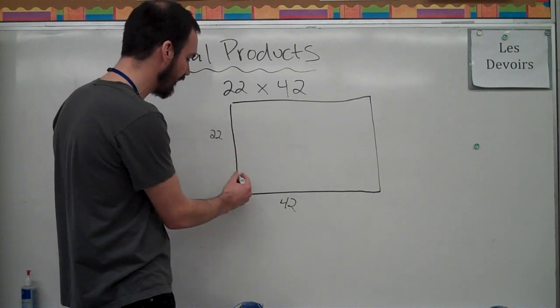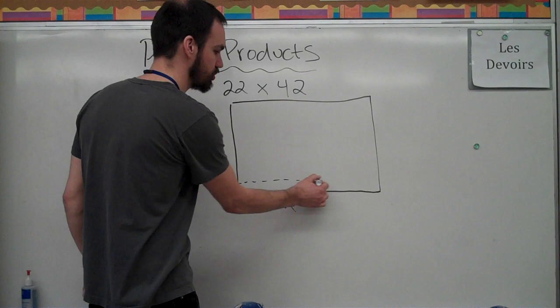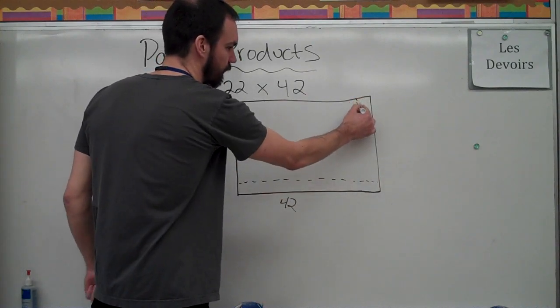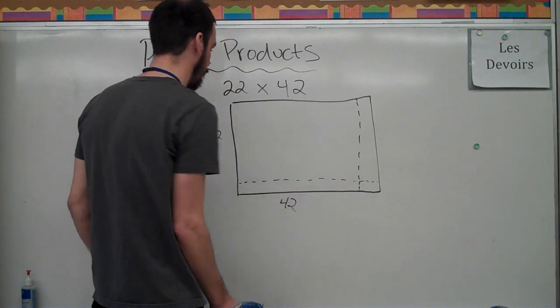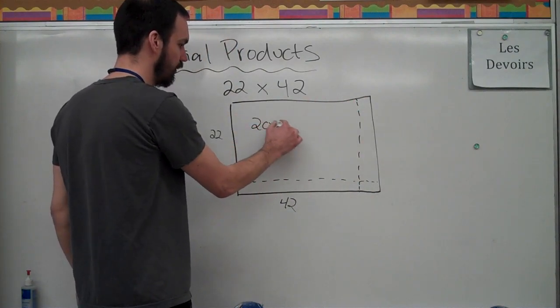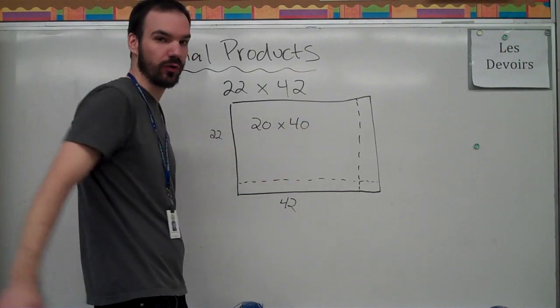So, I'm going to go, well, I like 20, I don't like 22. So I'm going to chop off two there, and I like 40, I don't like 42. So right here, I know in this square I have 20 by 40.